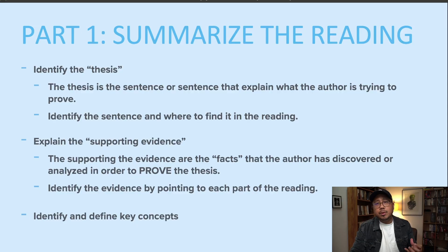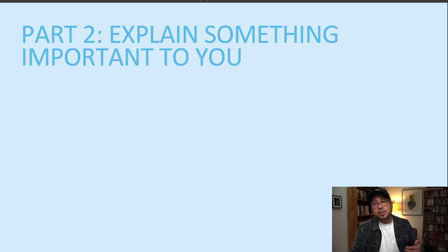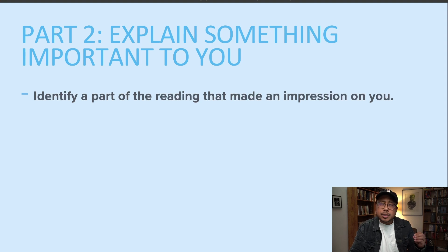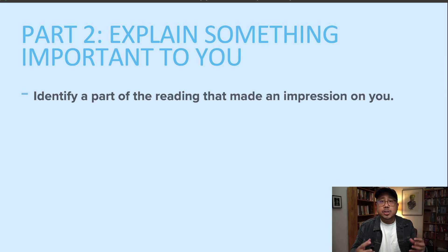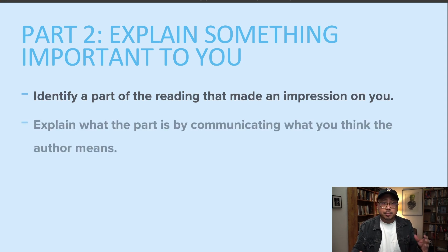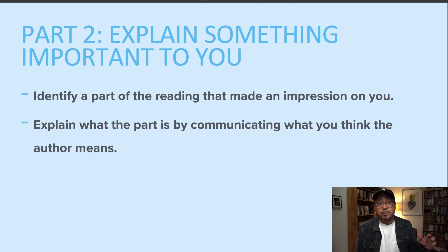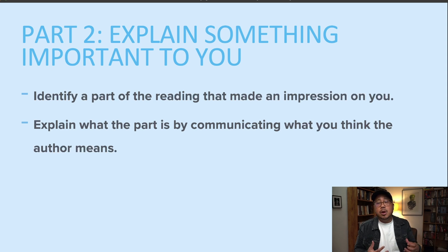After you're done summarizing the reading, move into part two of the assignment. I want you to identify something in the article that stands out to you — something that feels important or really interesting — and then explain it. Show us where in the article you found it. It could be a song, a poem, a story or character, or a concept. Just tell us what it is, where it is, and why it's important.